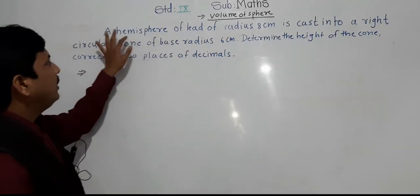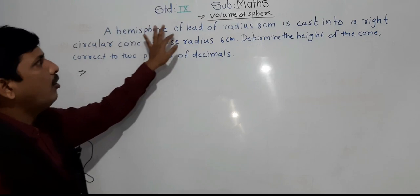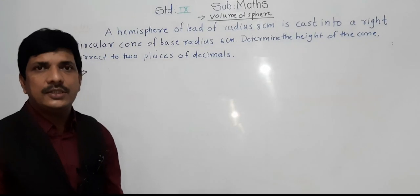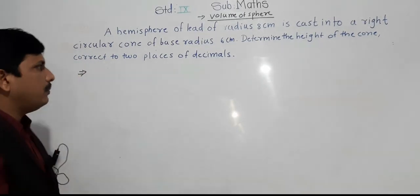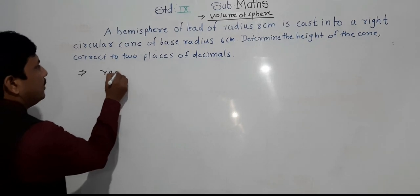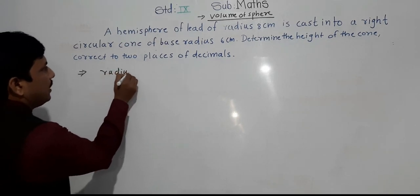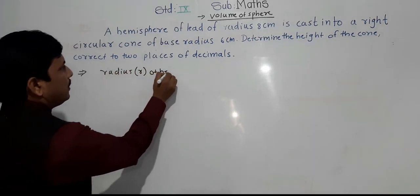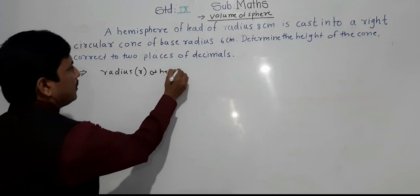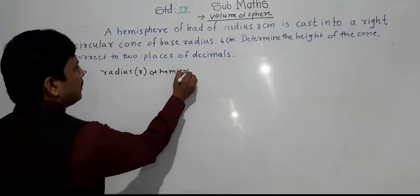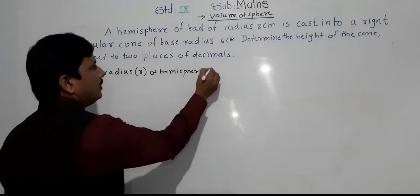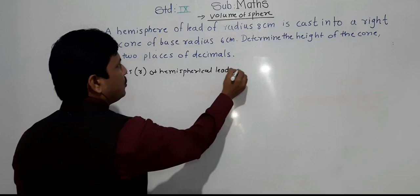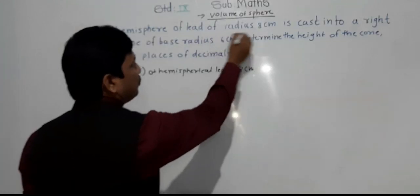Here, what is given: a hemisphere of lead of radius 8 centimeter. Radius is given — the radius of the hemisphere, which we will call R of hemisphere, equals 8 centimeter.